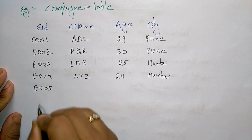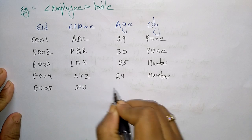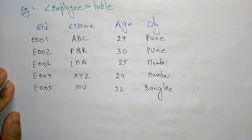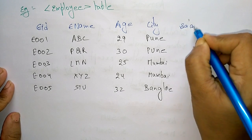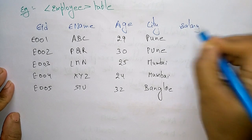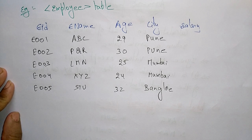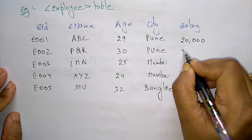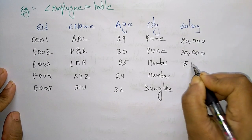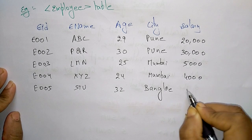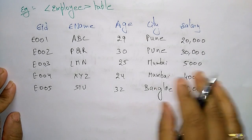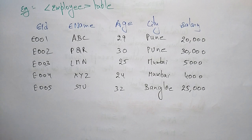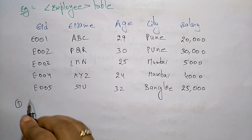Employee 5 has EID 5, name STU, age 32, from Bangalore. We will also add a salary field to this table. The aggregate functions will work on this salary column. The salaries are 20,000; 30,000; 25,000 (and others). This is the table we will work on for the aggregate functions.